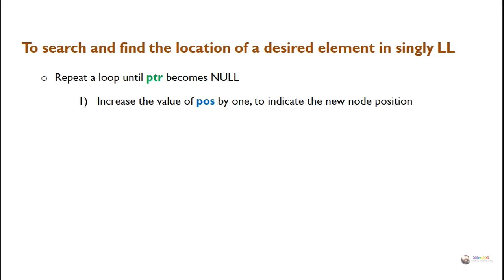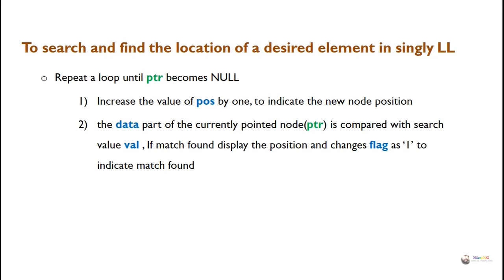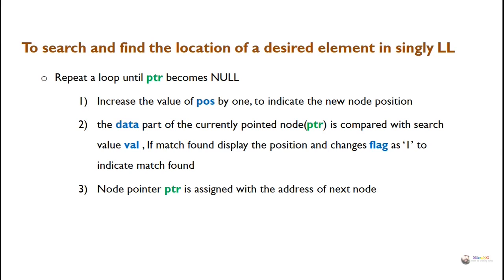Repeat a loop until the pointer becomes null. Inside the loop, first increase the value of position by 1 to indicate the new node position. The data part of the currently pointed node PTR is compared with the search value val. If a match is found, display the position and change flag to 1 to indicate match found. Then make the node pointer go to the next node by assigning the address of the next node. This loop keeps repeating until PTR becomes null.